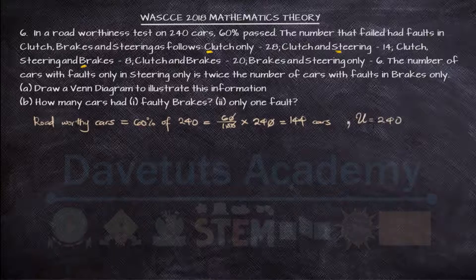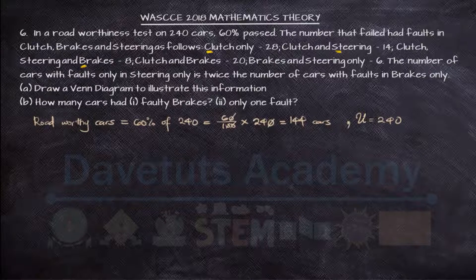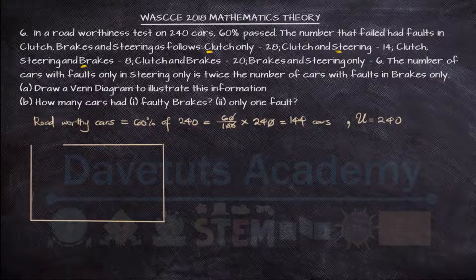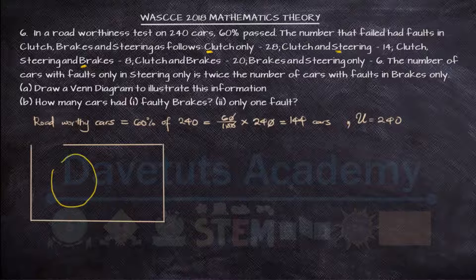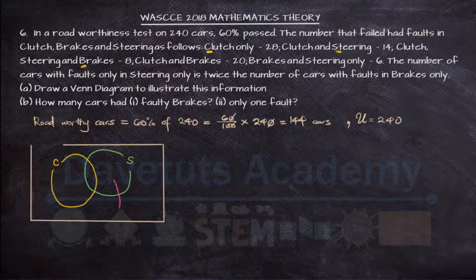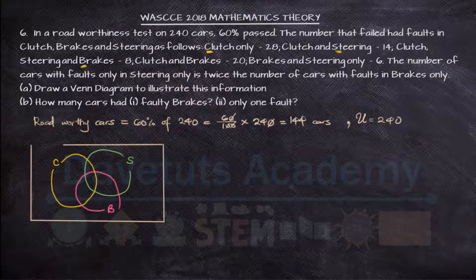So now we can go ahead to draw our Venn diagram. Okay, so we have clutch, steering and brakes as the faults that are on the cars. So let's say the yellow is clutch and then for the steering, we use a green marker. And then for the brake vehicles with brake issue, we use this.